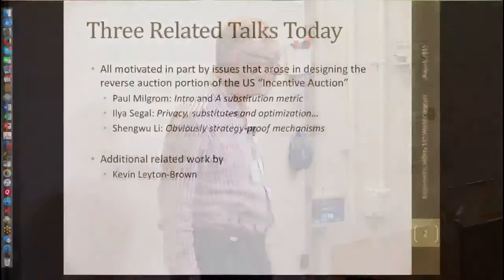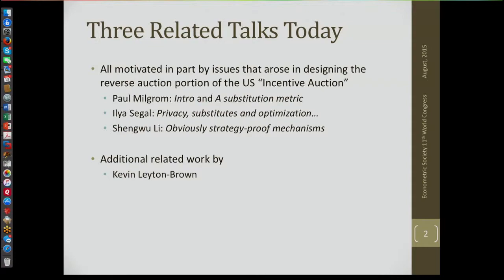The three related talks today are: one by me, where I'll give an introduction to the whole set of things and talk about the substitution metric; the talk by Ilya Segal on privacy substitutes and optimization; and the talk by Shen Wu Lee on obviously strategy-proof mechanisms. There is also related work by Kevin Leighton Brown. These are all motivated in part by work being done on the so-called U.S. incentive auction.